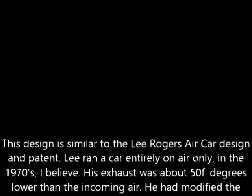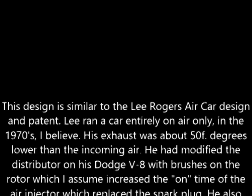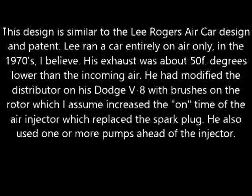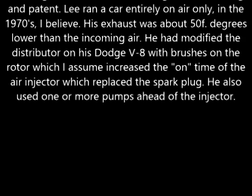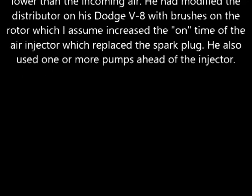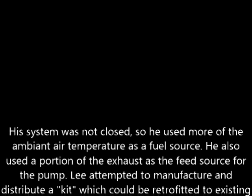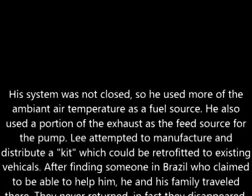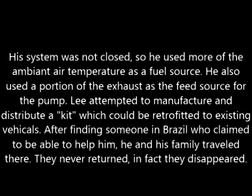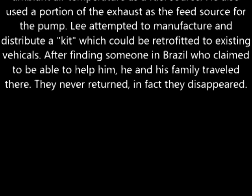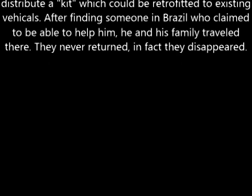This design is similar to the Lee Rogers Air Car design and patent. Lee ran a car entirely on air only in the 1970s. His exhaust was about 50 degrees lower than the incoming air. He had modified the distributor on his Dodge V8 with brushes on the rotor, which increased the on-time of the air injector that replaced the spark plug. He also used air pumps. His system was not closed, so he used more of the ambient air temperature as a fuel source, and also used a portion of the exhaust as the feed source for the pump. He attempted to manufacture and distribute a retrofit kit. After finding someone in Brazil who claimed to be able to help him, he and his family traveled there — and they never returned. In fact, they disappeared.